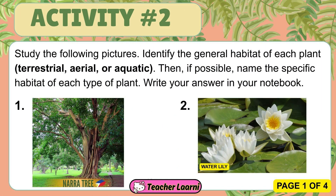All right kids, it's time for activity number two. Study the following pictures. Identify the general habitat of each plant — terrestrial, aerial, or aquatic. Then, if possible, name the specific habitat of each type of plant. Write your answer in your notebook.